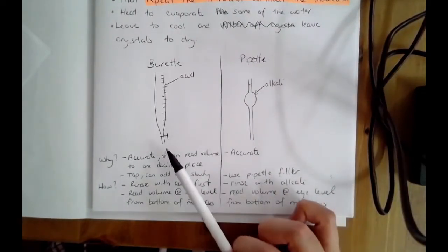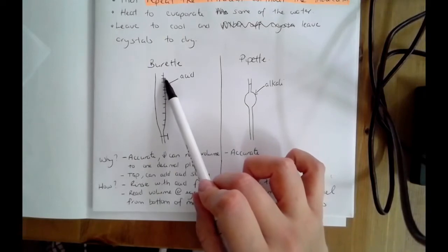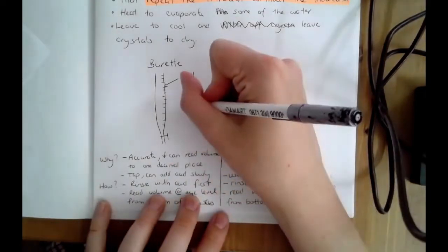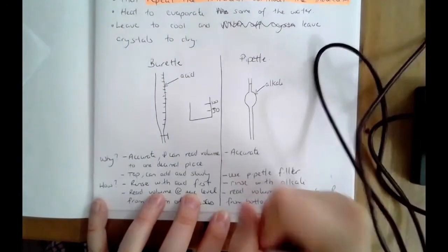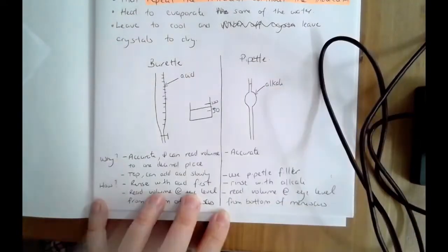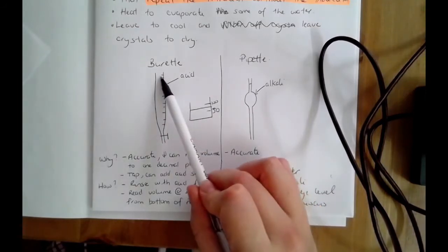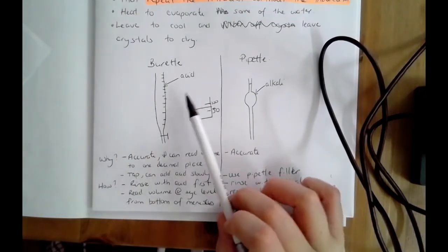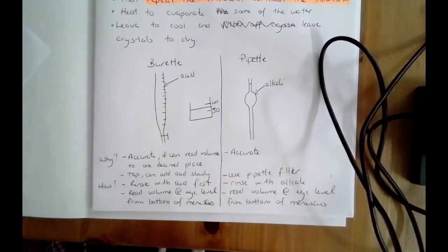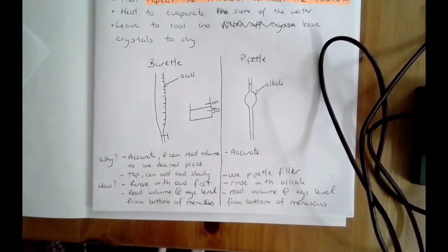We use these specific pieces of glassware because they're very accurate. The burette has lots of graduations on the side, allowing you to read the volume to one decimal place. Compare that to a beaker, which might only have a line at 100 mL and one at 50 mL — you'd be guessing. The burette's tap also lets you add acid very slowly, giving you control so you don't add too much.